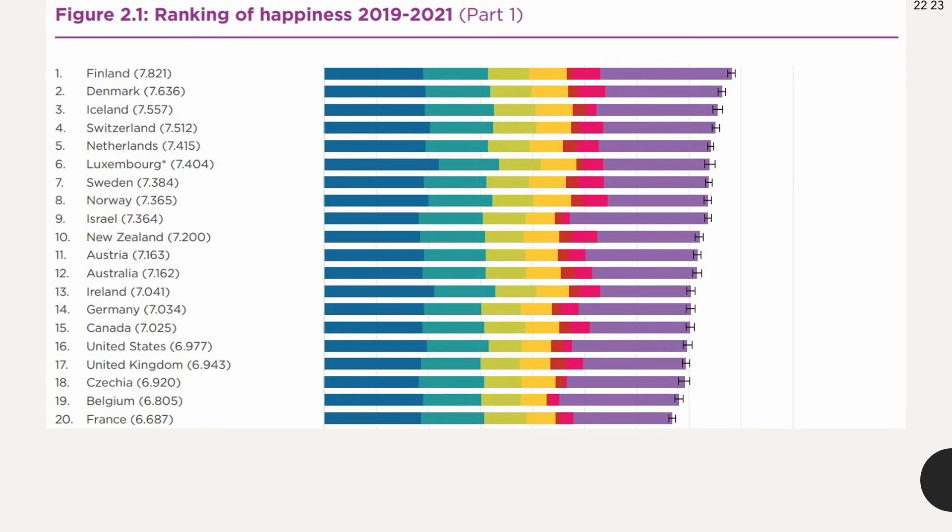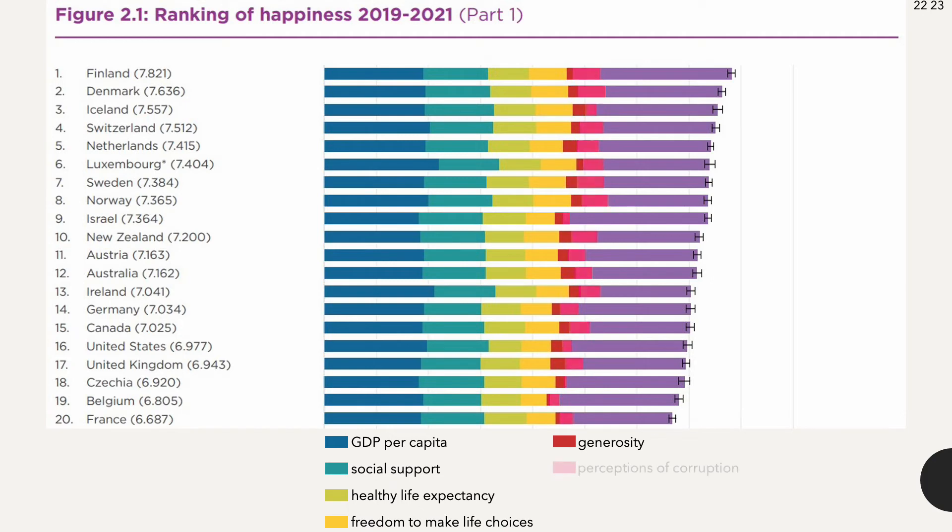The six variables are real GDP per capita, social support, healthy life expectancy, freedom to make life choices, generosity, and perceptions of corruption. The purple bar is dystopia, which represents the world's lowest national averages for each variable.